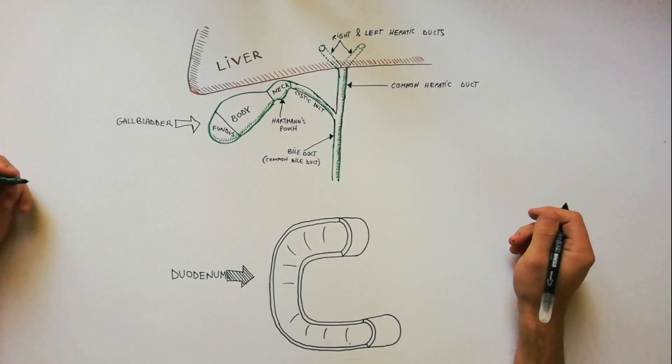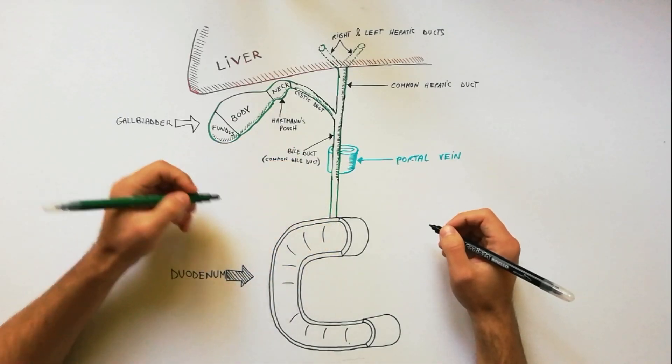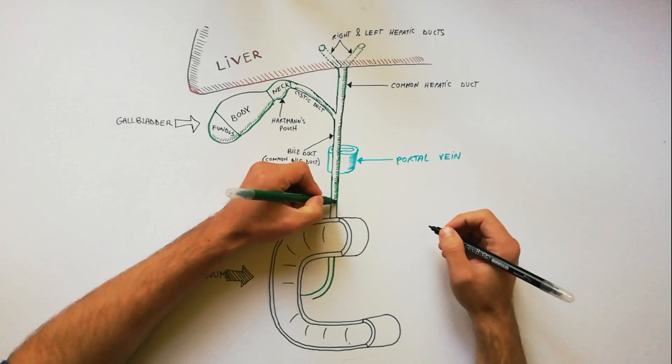The common bile duct lies in front of the portal vein, goes downward, passes behind the first part of duodenum, and empties into the second part of duodenum.